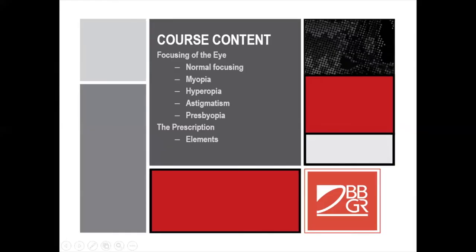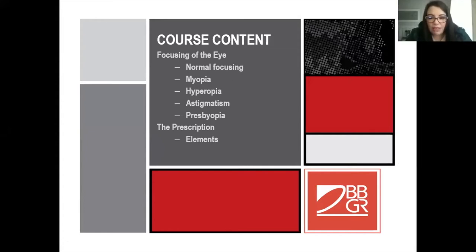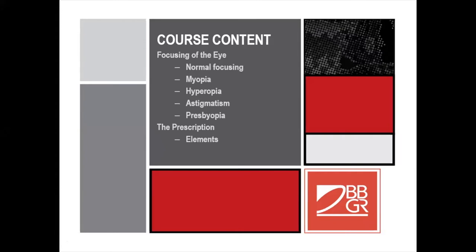Today we're going to combine our knowledge of the anatomy of the eye with our knowledge of the lens. This is going to be an interesting session, so please ask questions if you don't understand anything. First we're going to look at the normal focusing of the eye, then what's happening in a myopic eye, a hyperopic eye, astigmatism, and presbyopia. Then Aletia is going to discuss the elements of an optical prescription with us.